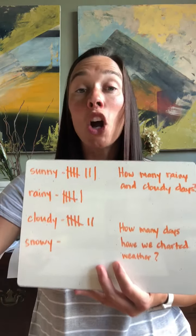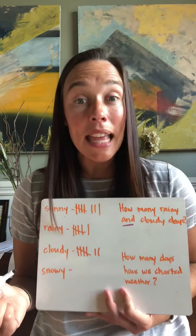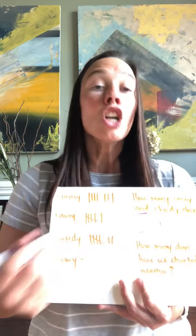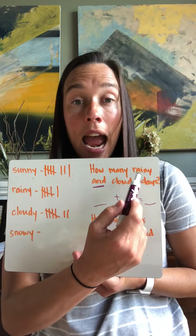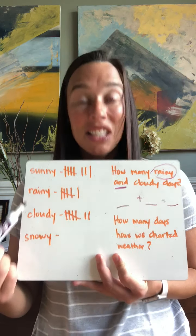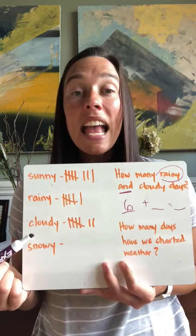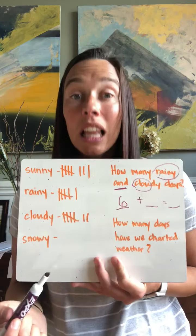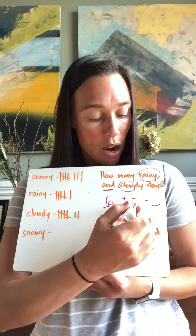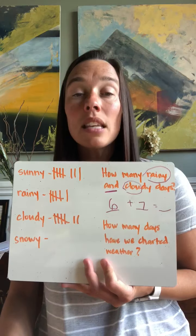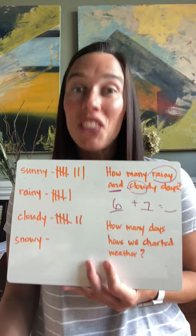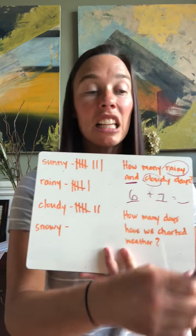Let's look at our weather chart and see how many rainy and cloudy days we've had. When we hear the word 'and,' that means plus, so I'm going to make an addition problem. How many rainy days have we had? Six. And how many cloudy days have we had? Seven. So what is six plus seven? Thirteen. We have had 13 rainy and cloudy days. Awesome job.